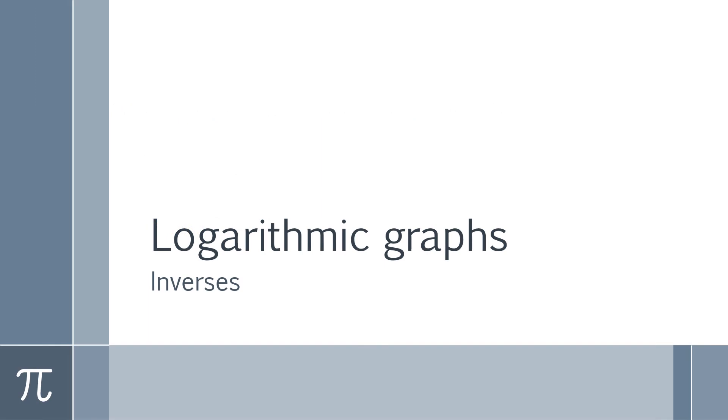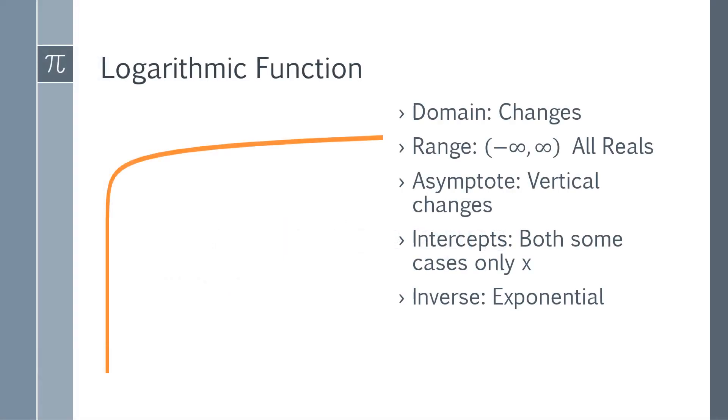Logarithmic graphs. Remember, logarithmic and exponential are inverses of each other. A logarithmic function, the domain will always change. Your range is forever stay the same. Your asymptote is vertical. An asymptote is where it gets close to, but never touches. Or, at some point it does, but when it does, it becomes undefined.